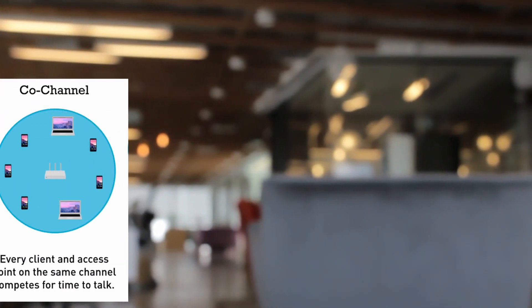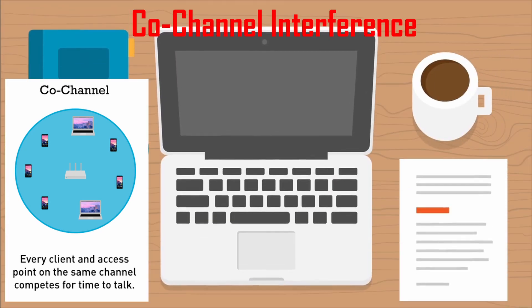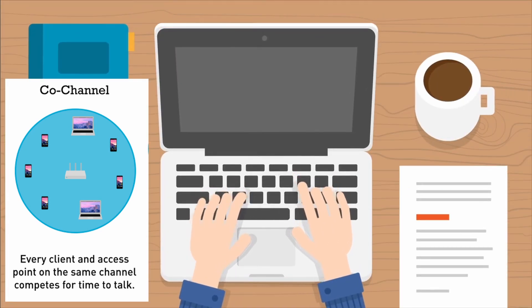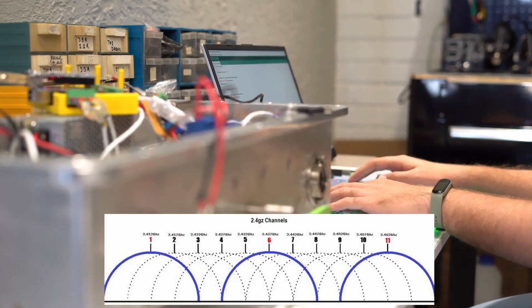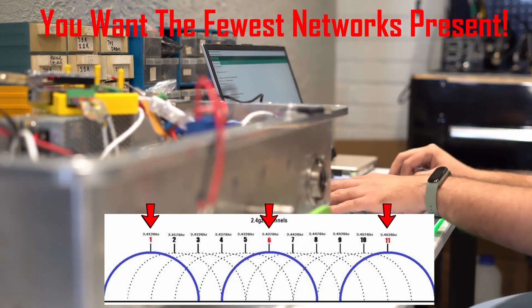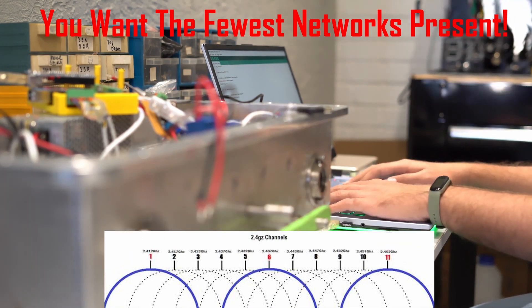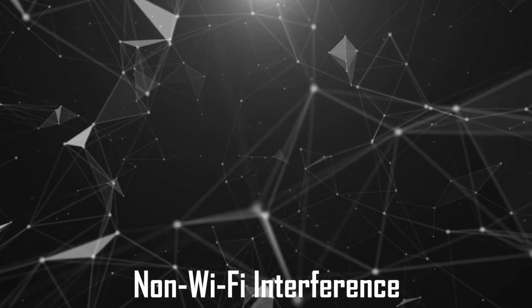Channels 1, 6, and 11 are considered non-overlapping channels. However, when picking 1, 6, or 11, you will have to share the channels with other networks — this is called co-channel interference. Every client and access point on the same channel competes for talk time. What you're looking for in channels 1, 6, and 11 are the fewest networks present, which results in the least interference and faster Wi-Fi speeds. There's also non-Wi-Fi interference — a good example is a microwave.